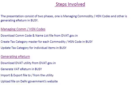For managing commodity HSN codes, you need to perform the following steps: download the commodity code and name list file from DEWAT.gov.in, create a tax category master for each commodity HSN code in BSI, and update the tax category for individual items in BSI.